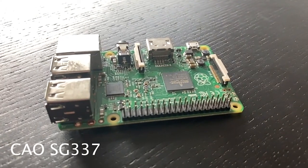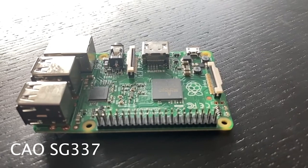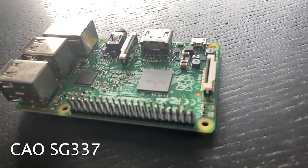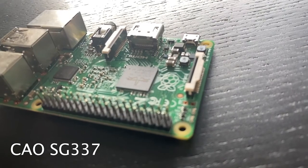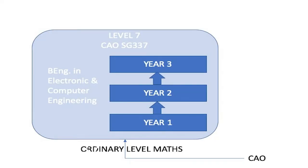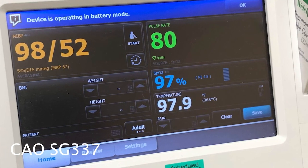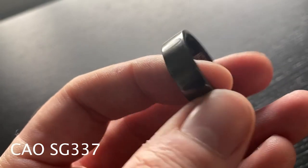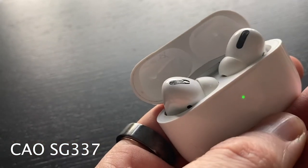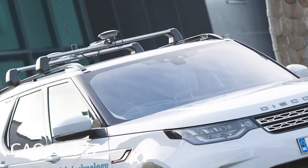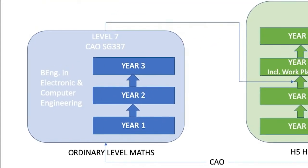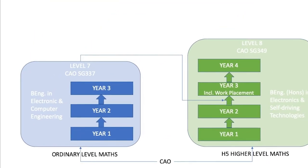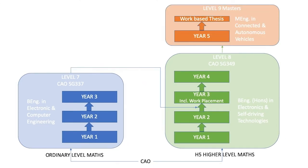If you are interested in technology or engineering but are not doing higher level maths, why not consider our level 7 in electronic and computer engineering? This is a three-year program that looks at the design and development of embedded electronic systems. These are the medical devices that keep us healthy, the consumer devices that keep us entertained, or the control systems that keep us safe on the road. You can then progress onto the level 8 in electronics and self-driving technologies, and from there to the masters. Check out the link below for more information.